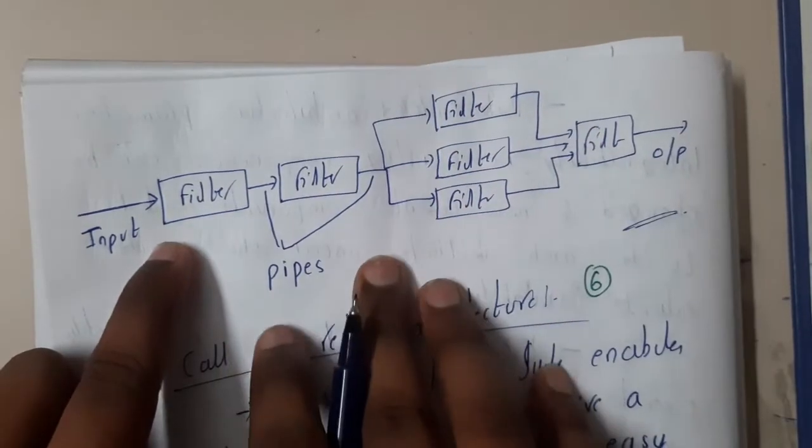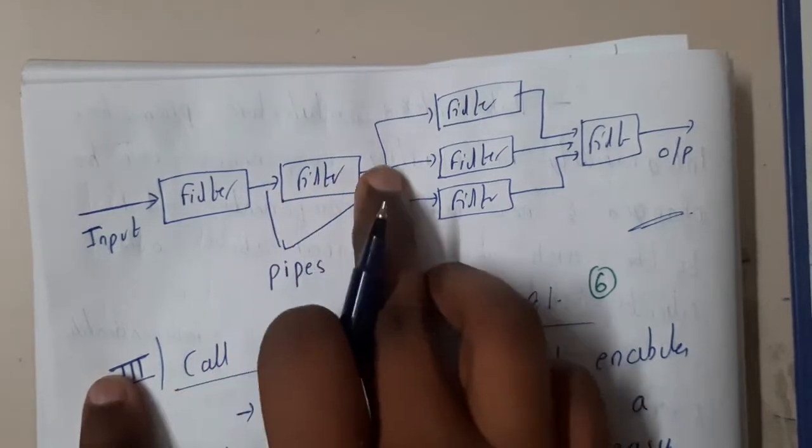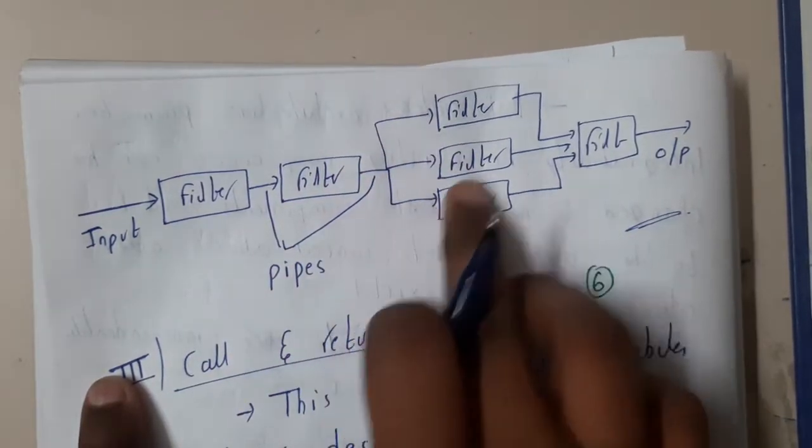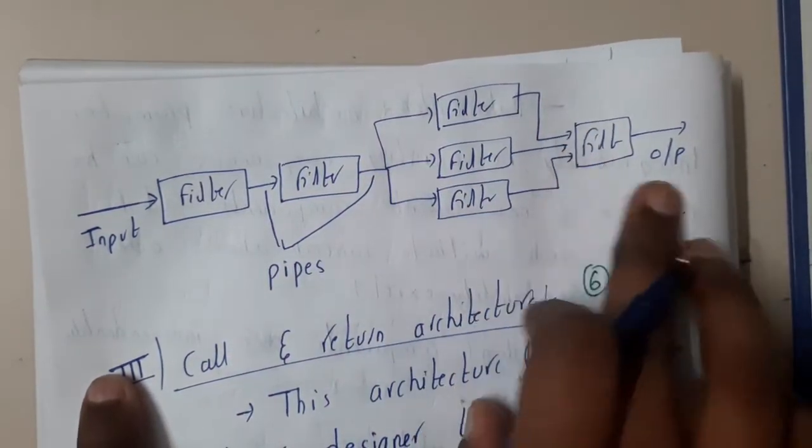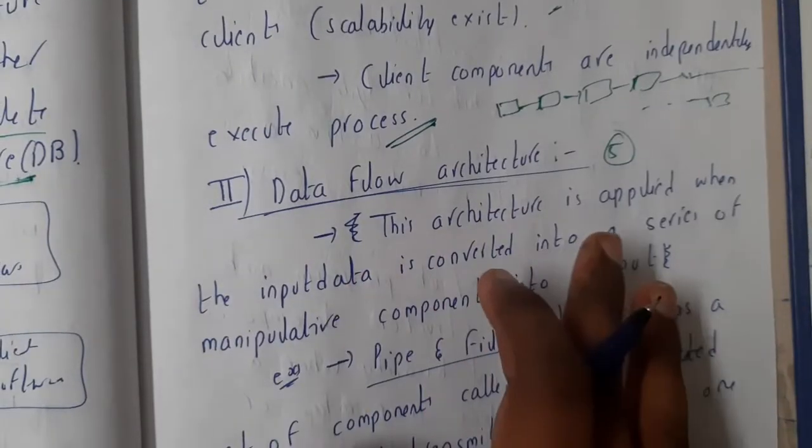So in this way, basically one input comes. Based on this, the output is generated. Based on this, the output is generated. It goes all through the paths, and the outputs are generated. They are combined, and then the final output is generated. So this is nothing but the data flow architecture.